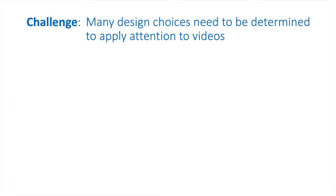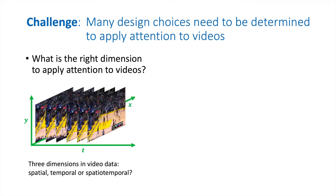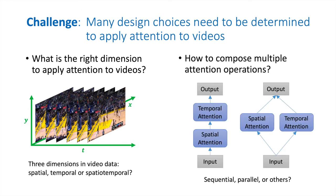However, many design choices still remain to be determined to use attention, especially when applying attention to videos. For example, there are three dimensions in videos. What's the right dimension to apply attention to videos? Spatial, temporal, or spatial-temporal? Also, when we have multiple attention operations, how to compose them? Should we apply them in a sequential manner or a parallel manner? All these design choices need to be determined when we use attention.